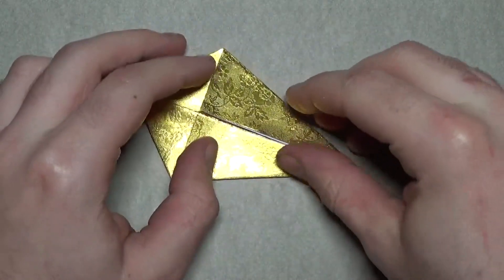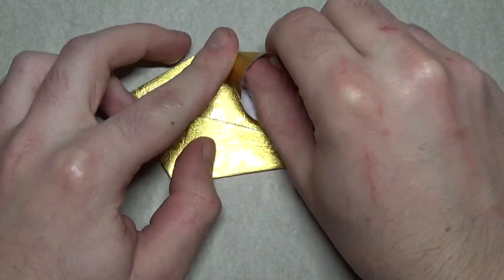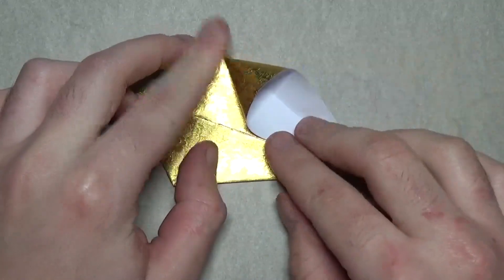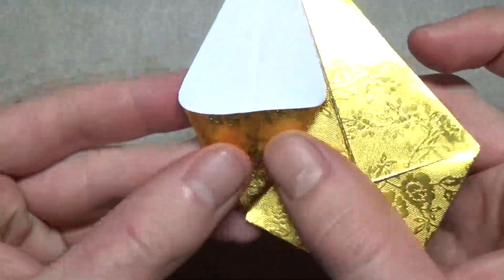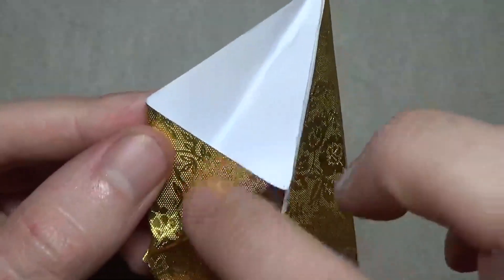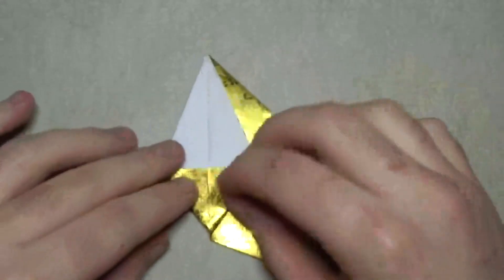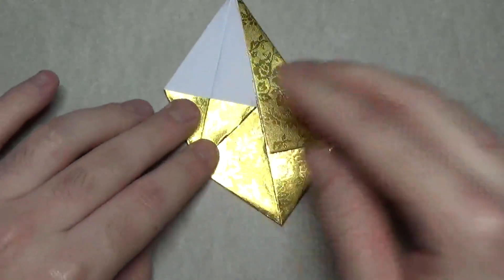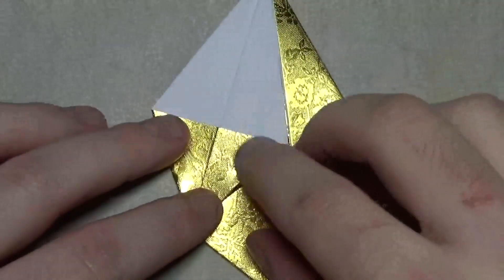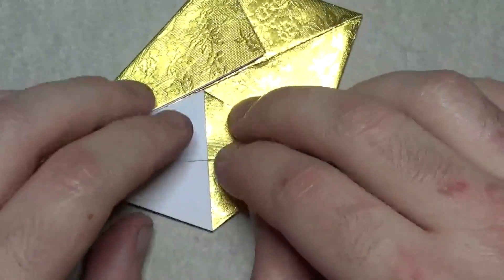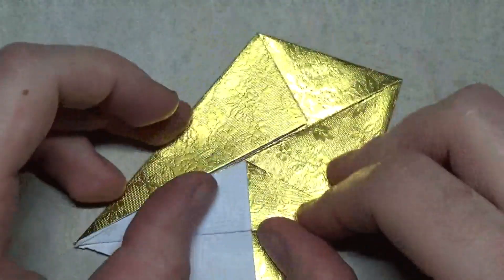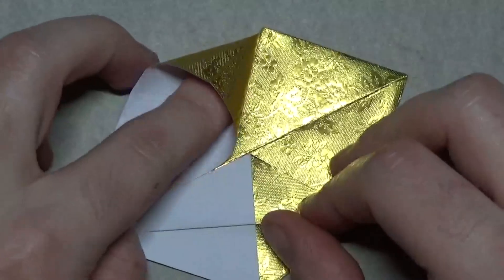Crease sharply. Now this is probably the hardest step. We're going to take this flap here and we're going to open it up and squash it so that this crease aligns with this line here. I'll zoom in a little bit more so you can see what I'm doing. This is paper from Amazon, it's foil paper. Let's repeat on this side.